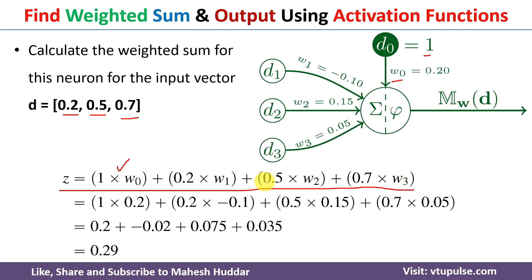Now I need to put the values of W0, W1, W2, and W3. We know those values from this network. Once I solve it, I will get 0.29 as the weighted sum of this neuron. Once you calculate the weighted sum, the next step is to apply the activation function and get the output. There are different activation functions given to us; we will apply each one and calculate the output. Z is equal to 0.29, which is required to calculate the actual output.